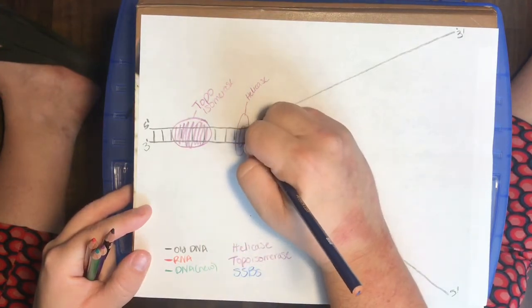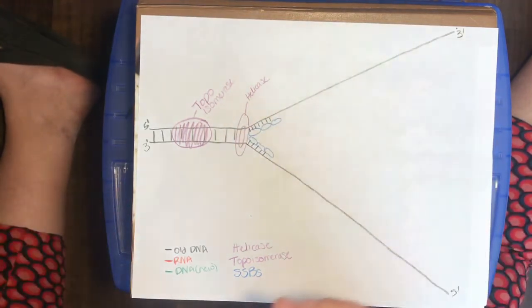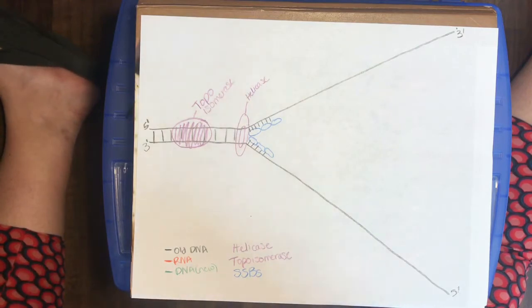And what they are is effectively like molecular paperweights. They keep these single-stranded DNA strands from re-annealing or rejoining to make a double-stranded molecule. So they keep the fork open.